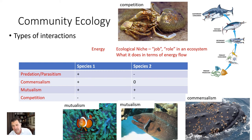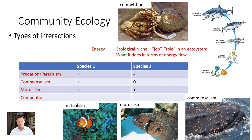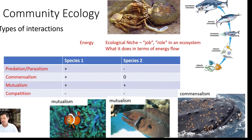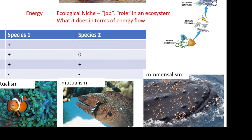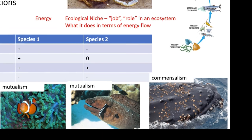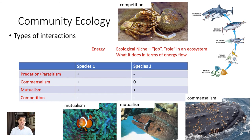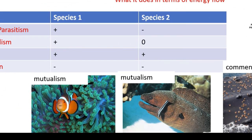Parasitism is also one of the interaction types. For example, a flea on your dog — the flea is gaining energy from the dog, while the dog is losing energy. In commensalism, one organism benefits and the other doesn't really gain or lose. For example, certain barnacles only grow on whales — the barnacle benefits by having a substrate to grow on, and as far as we know, the whale doesn't care one way or the other.